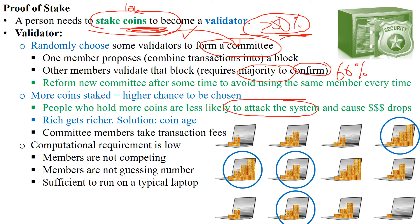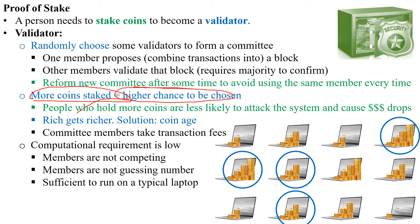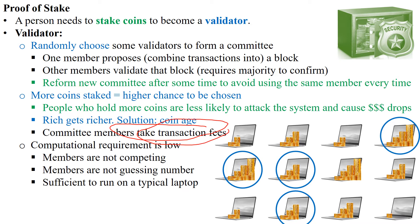However, this creates a problem: rich gets richer. People who have more coins — more money — will have a higher chance to be chosen as validator. If chosen, they can collect transaction fees as their reward, making the wealthy even wealthier.